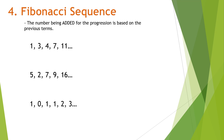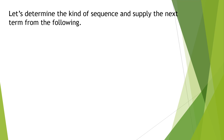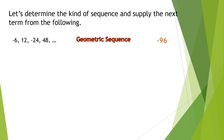Hope you understand the four types of sequence based on their pattern. Let's have more examples to determine the kind of sequence and supply the next term. Number 1: negative 6, 12, negative 24, 48. Notice there is an alternating sign in the progression. Therefore, this falls under a geometric sequence because the progression is made by multiplying negative 2. So the next term after 48 is negative 96, because 48 times negative 2 is negative 96.